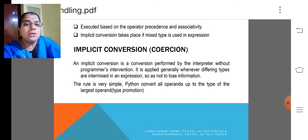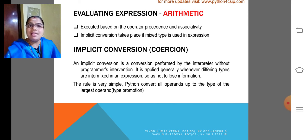Then, this also we had already discussed, evaluating expression. The arithmetic expression is executed based on the operator precedence and associativity. It may take implicit conversion takes place if mixed type is used in the expression. Already we discussed about implicit type conversion.